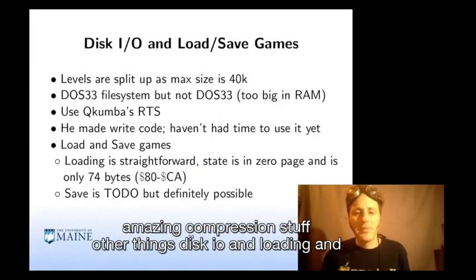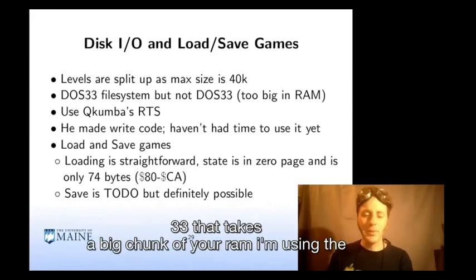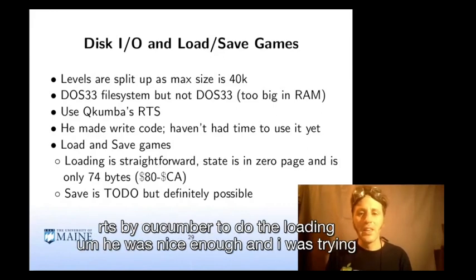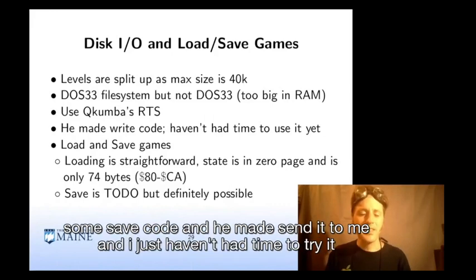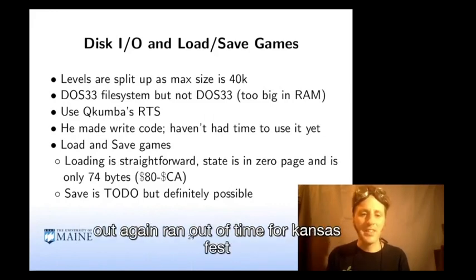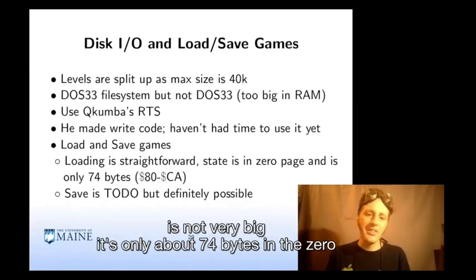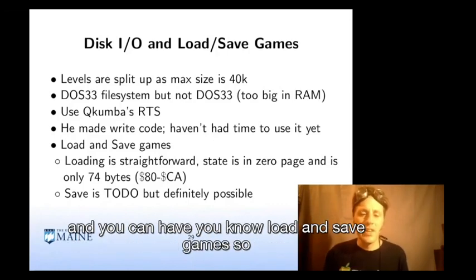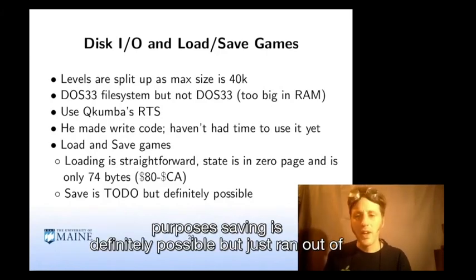Disk IO, loading, and saving games: the levels are split up to a max size of about 40K, using the DOS 3.3 file system format but not actually running DOS 3.3 — which takes up a big chunk of RAM. I'm using Cucumber's RWTS routines to do the loading. He was kind enough to write some save game code when I needed it. Loading and saving game state is fairly straightforward because the game state is not very big — only about 74 bytes in the zero page. You just load and store that for save games. Currently loading works for debugging purposes; saving is possible but I just ran out of time.